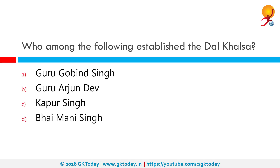Who among the following established the Dal Khalsa? Dal Khalsa is a Sikh organisation based in the city of Amritsar. The organisation was formed in 1978 by Kapoor Singh and came to prominence under the inspiration and time of Jarnail Singh Bhindranwale in 1981.